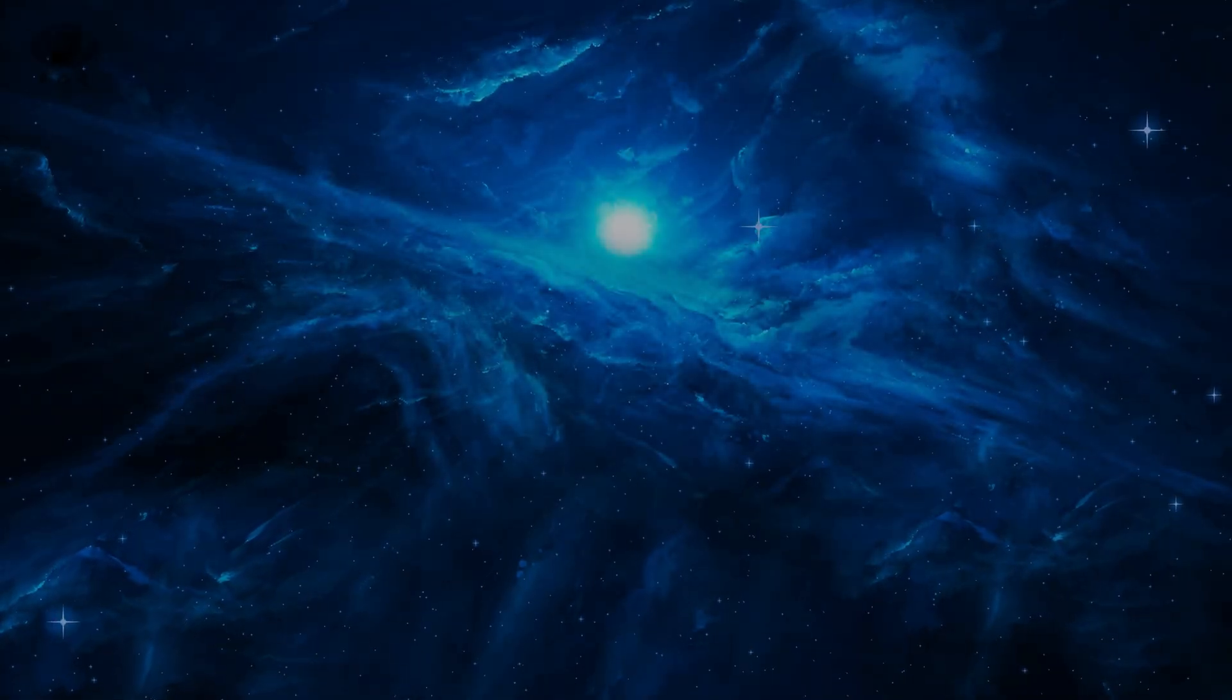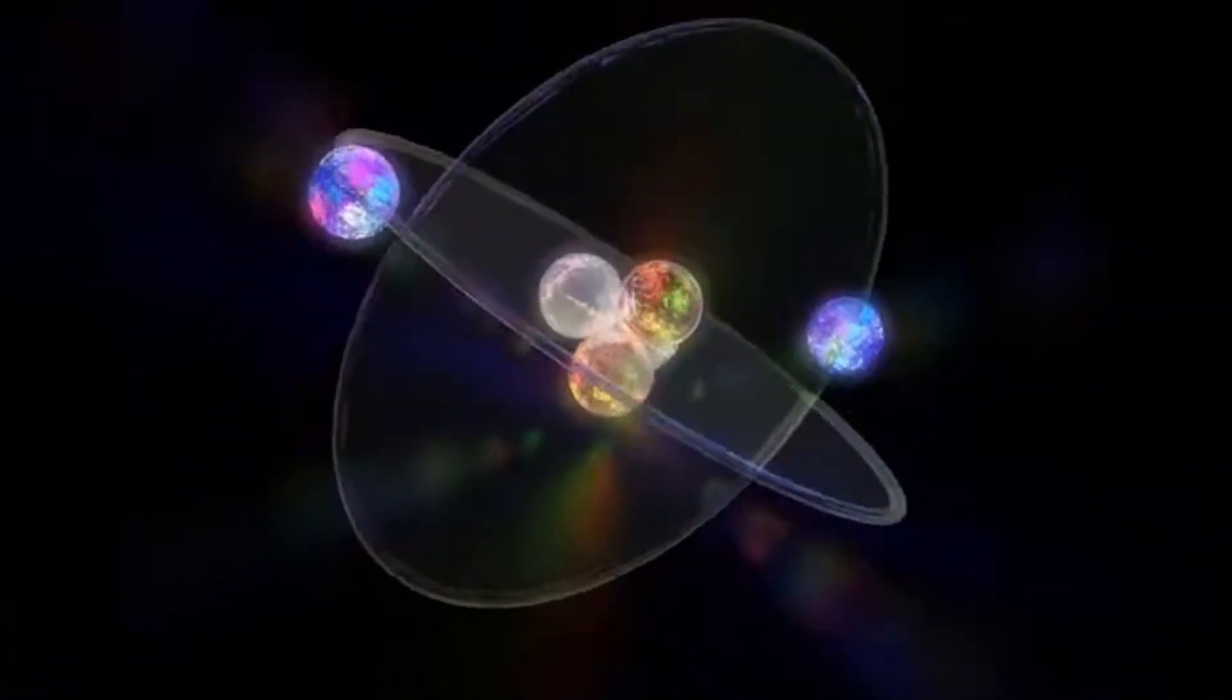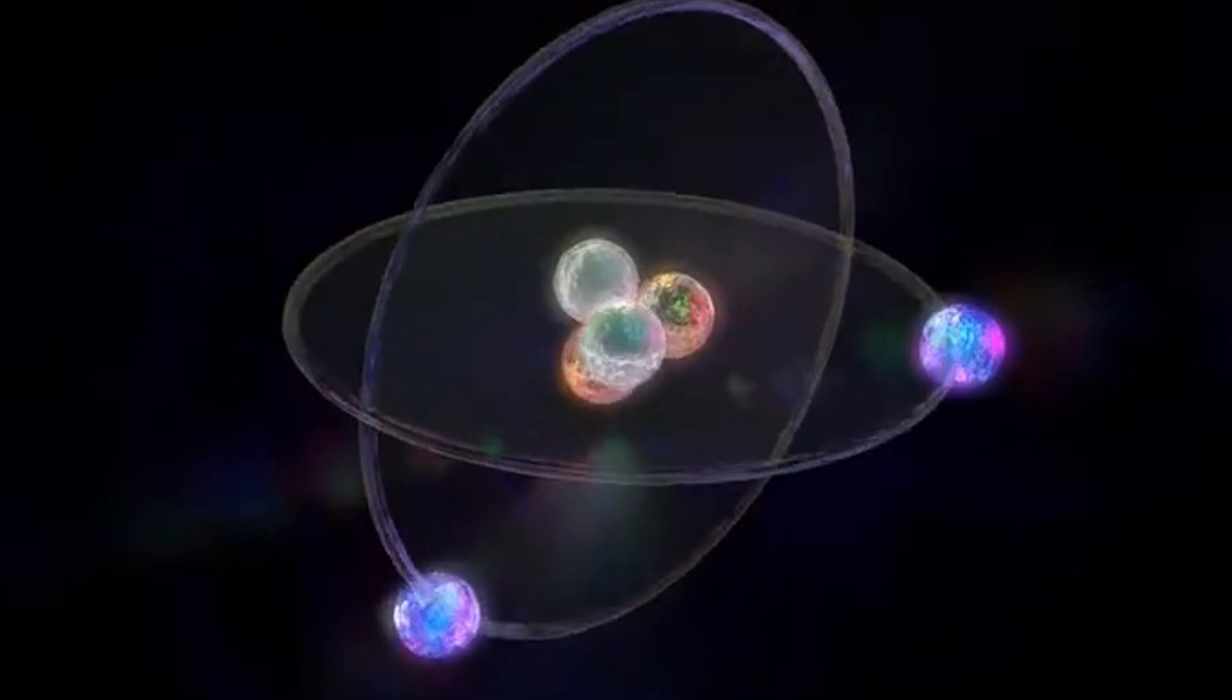About 300,000 years later, the universe cooled enough for electrons to combine with these nuclei to form neutral atoms, allowing light to travel freely for the first time.